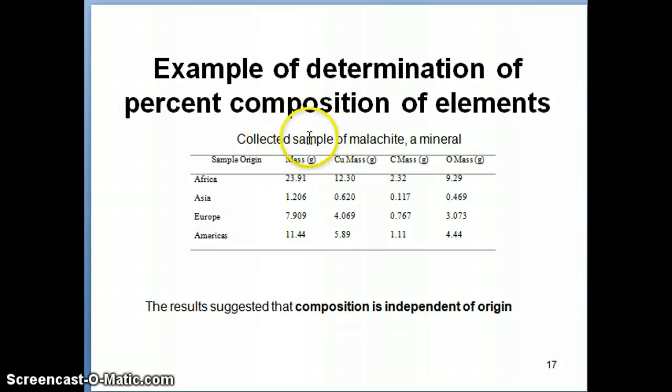You can, for example, collect a sample of malachite, which is a mineral that's composed of copper, carbon, and oxygen. And if you were to collect a sample of malachite from different continents, let's say Africa, Asia, Europe, and the Americas, you can collect different samples. They all have different masses. And then what you can do is you can take this and you can decompose it. So decompose is a word that has a special meaning here. It means that you're taking it and you're heating it down to its elements. So you break it down into its elements and then you weigh each of these elements. So you get these masses right here. So how do we show, in this case, that all the malachites from all these different locations have the same percent mass composition? We'll work on this on the next slide.